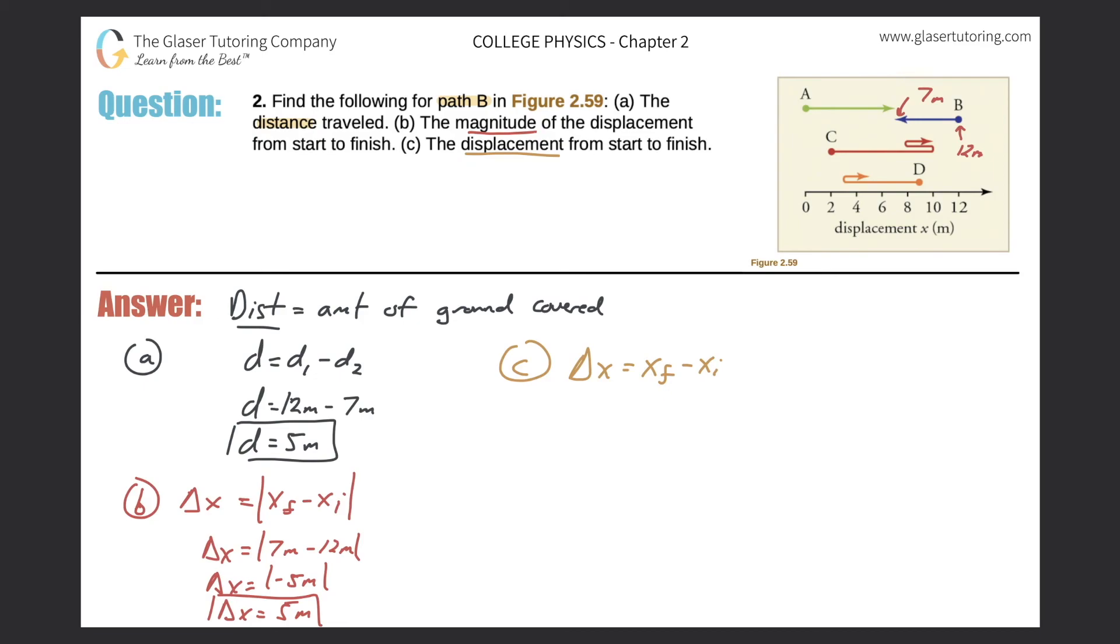So no absolute value sign now because we want to know the displacement magnitude and the direction. Now it's just going to be 7 meters minus 12 meters because it's the final value minus the initial. And now the displacement value is negative 5 meters.